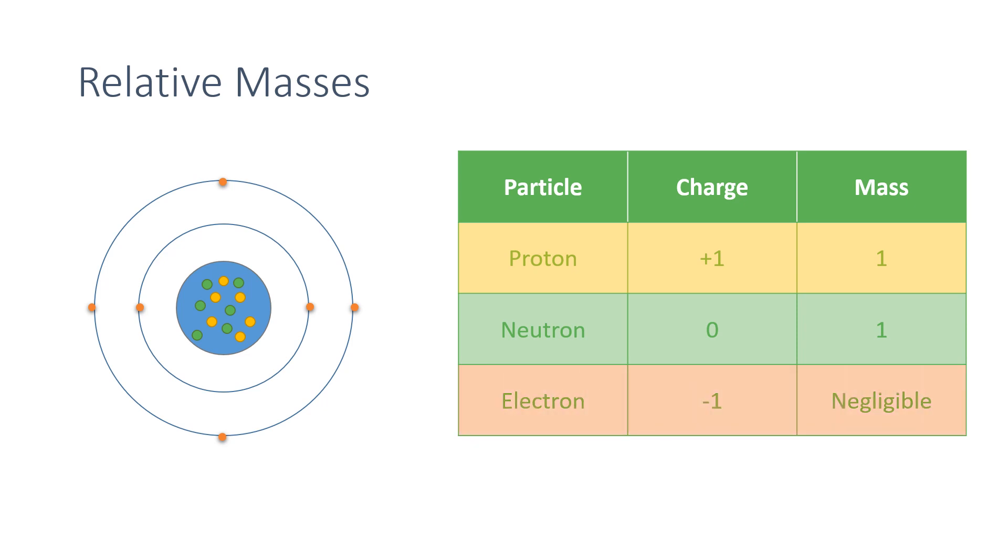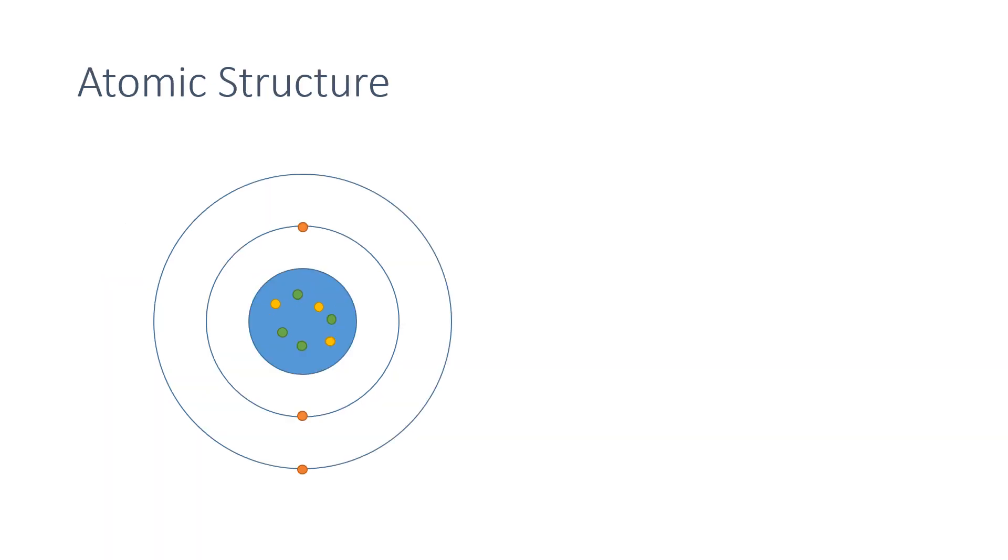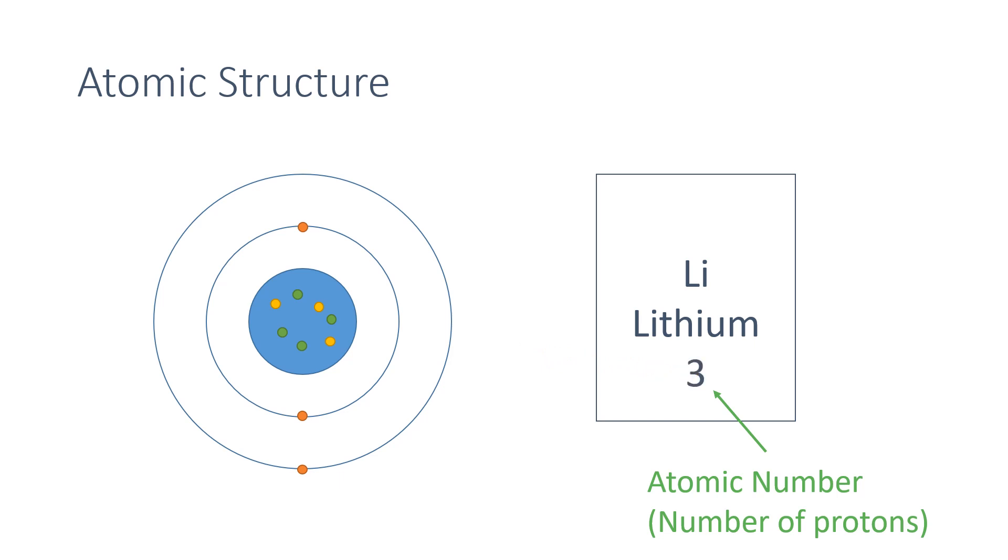As well as being represented on a diagram, the atomic structure can also be seen on the periodic table. The bottom number is the atomic number, which is the number of protons. For lithium, you can see that this is 3. The mass number at the top is the number of protons and neutrons put together, and in this example is 7.